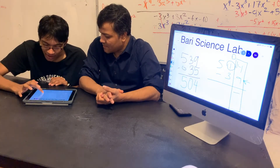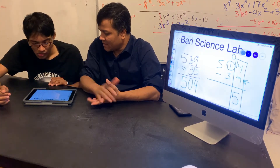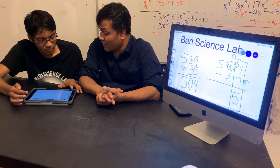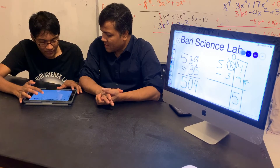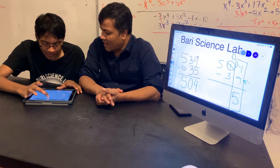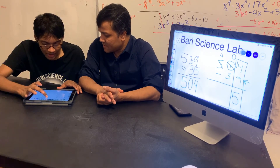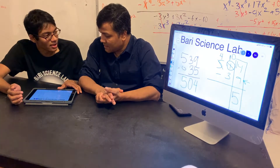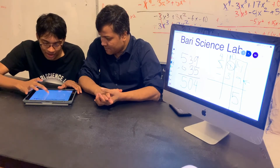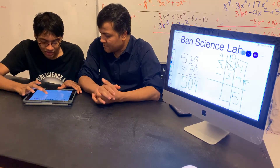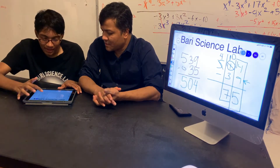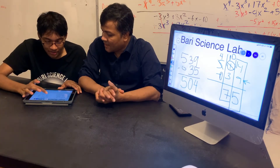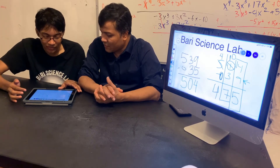Now I have zero groups of ten, so I have to borrow again from the five. Five groups of hundred become four groups of hundred, and I put that extra one over here. Now I do ten minus three, which gives me seven. I have four groups of hundred, and I forgot to put an imaginary zero here — four minus zero gives me four. Final answer is 475.